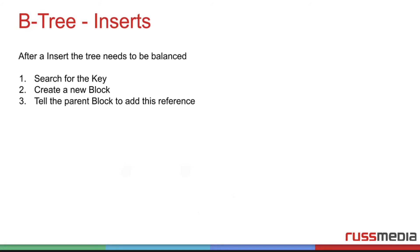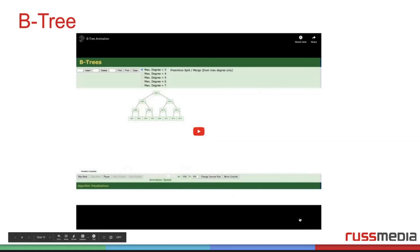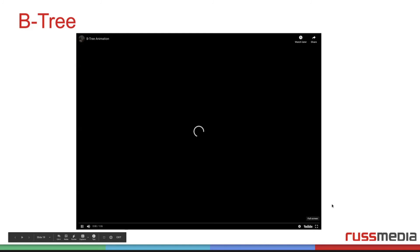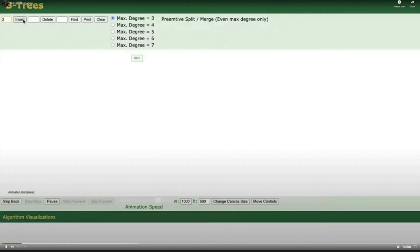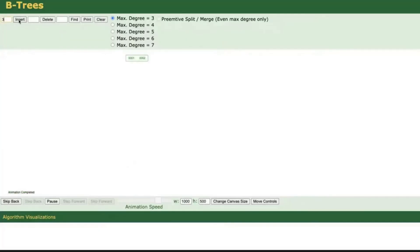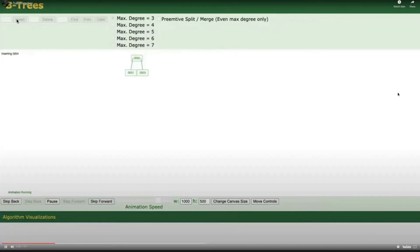Inserts are a little bit harder with B trees because we have to first search the key like we just did, create a new block there, and tell the parent block to update. This can take some time, and if we have bad luck, the whole tree needs to rebalance. To make this more clear, I created a little animation where we insert some values — the whole tree needs to rebalance again.